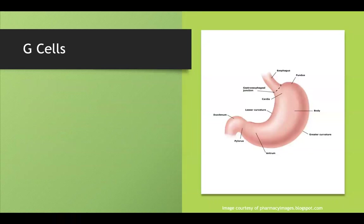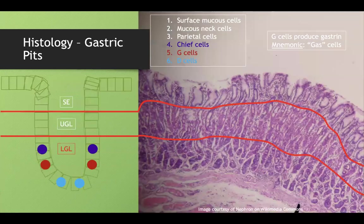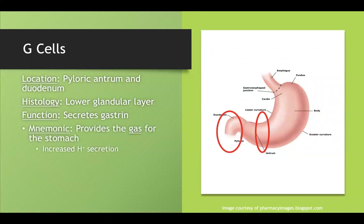G cells are located in the pyloric antrum and duodenum, in the lower glandular layer of the stomach alongside chief cells and D cells. Their function is to secrete gastrin. A good mnemonic: G cells are 'gas cells' because they provide the gas for the stomach — they increase hydrogen ion secretion, gastric motility, and gastric mucosa growth.